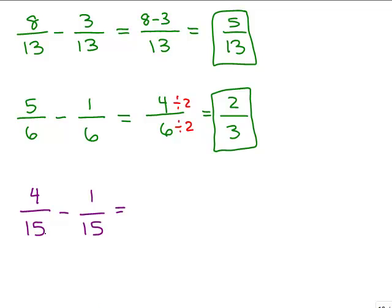All right, we've got 4 fifteenths minus 1 fifteenth so that will be 3 fifteenths and that reduces to 1 fifth. How did I get that? I divided the top and bottom by 3, I divided that by 3, both the numerator and denominator by 3 to get 1 fifth.